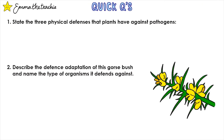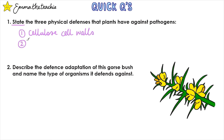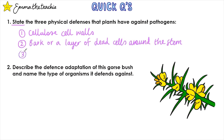Let's test what you've learnt. State the three physical defenses that plants have against pathogens. As the question says 'state', we don't need to describe them. So we've got: cellulose cell walls, bark or a layer of dead cells around the stem, and a tough waxy cuticle on the leaves.